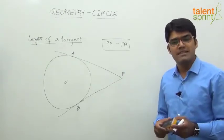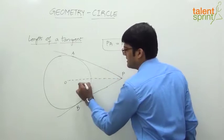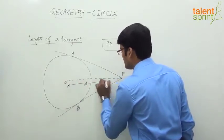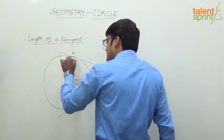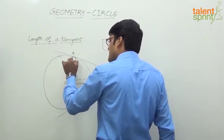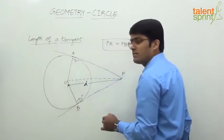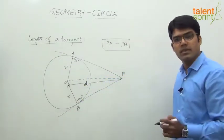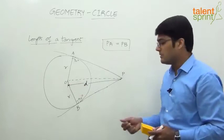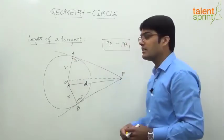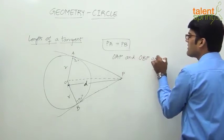How do we measure the length of a tangent? Let the distance between the center O and the external point P be d. We know that the radius and the tangent make an angle of 90 degrees at the point of contact, so this angle is 90 degrees here, and likewise 90 degrees at the other point of contact. The radius is r in both cases. We have two right angle triangles: OAP and OBP.